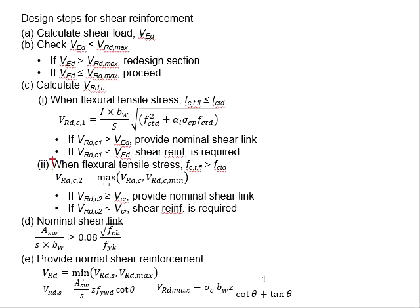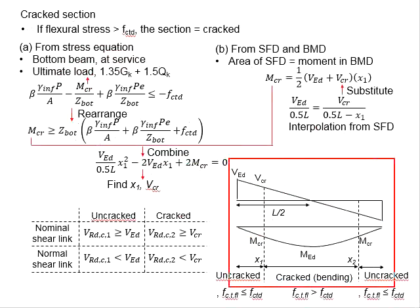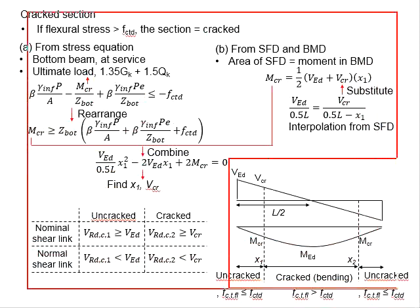The second condition for the concrete capacity under shear is that the flexural tensile stress is greater than the design tensile stress of the concrete. This is the stage where the concrete has already cracked. Its shear capacity is given by this equation, which is VRDC2, and the shear capacity is checked against the cracked shear, which is determined from the calculation steps outlined here.